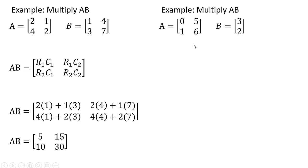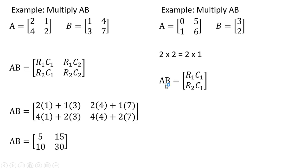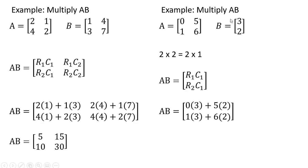Another example: here we have a 2 by 2 matrix and a 2 by 1 matrix. Checking that we can multiply these — we can, the two inner numbers match. The outer numbers tell us that the product AB will be a 2 by 1 matrix — two rows, one column. We take row 1 from the lead matrix and multiply by column 1 of the lag matrix, giving 0 times 3 plus 5 times 2. The bottom element is row 2 times column 1: 1 times 3 plus 6 times 2. We get our 2 by 1 matrix.